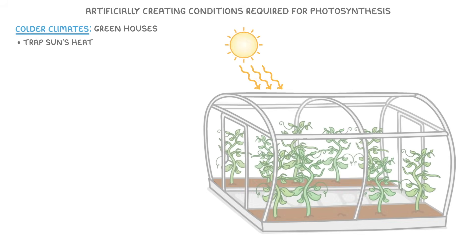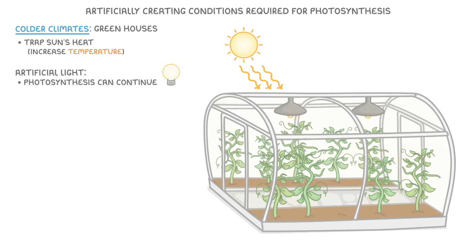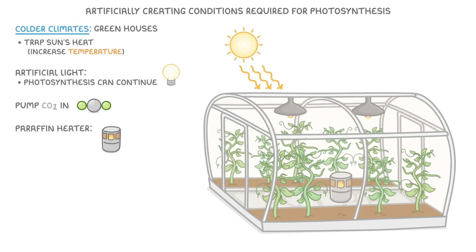Now that we understand the conditions required for a high rate of photosynthesis, we can think about how farmers might try to artificially create these conditions so that their plants can grow well. In colder climates, farmers often place their crops in greenhouses, which trap the sun's heat and increase the temperature. They can also provide artificial light so photosynthesis can continue all through the day and night. Sometimes farmers might pump carbon dioxide into the greenhouse, or use something like a paraffin heater, which releases both heat and carbon dioxide as it burns.